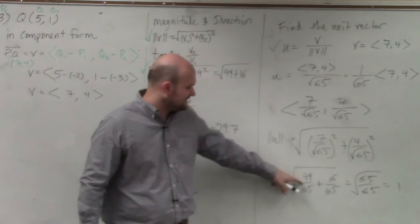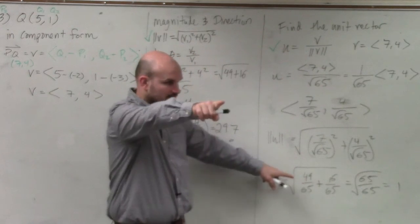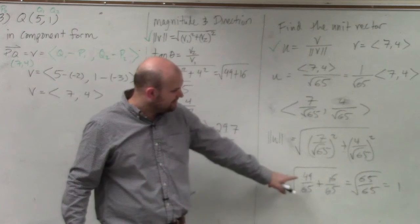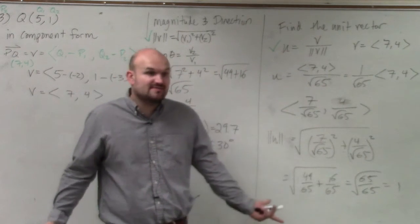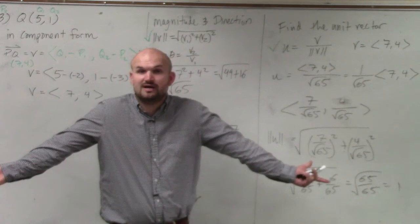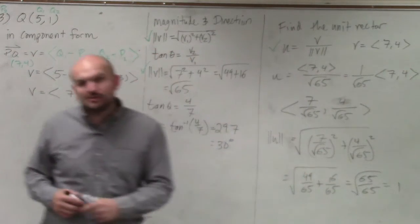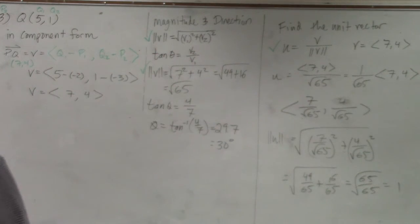So therefore, this equals 49 plus 16 over 65, which is 65 over 65, which equals the square root of 1, right? So you can see by this unit vector, what we just did is we created a vector that has magnitude 1.